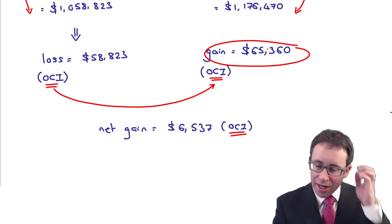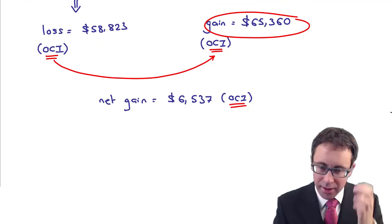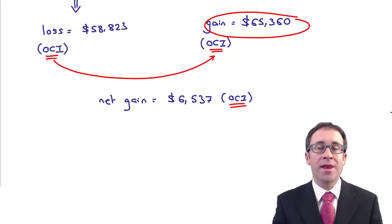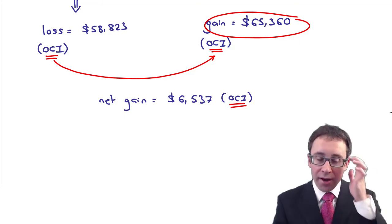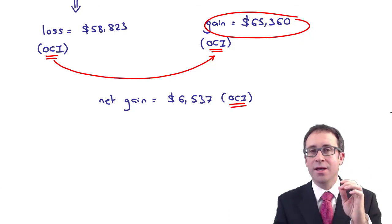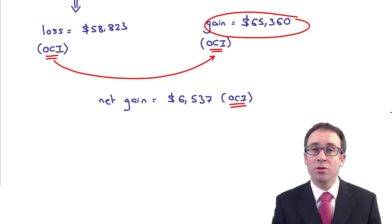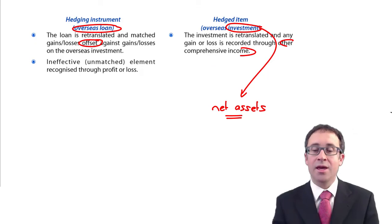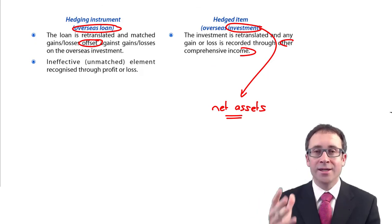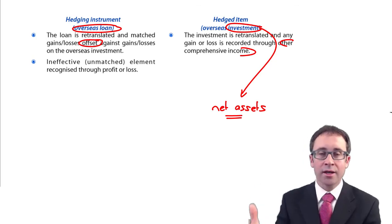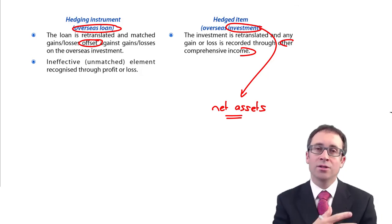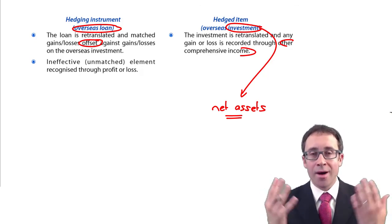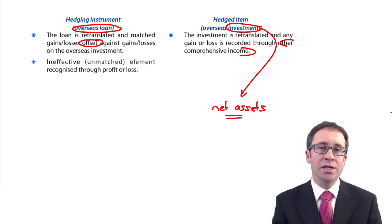What you can see is that the hedge is slightly ineffective — not 100% effective. In the next video we'll discuss effectiveness in more detail and see this is an under-hedged transaction. The key point: the item is the net assets, translated at the closing rate with gains and losses to OCI. For the instrument — the overseas loan — instead of taking gains and losses to profit or loss, we take them to OCI to match against the gains and losses on translation of the overseas net assets.